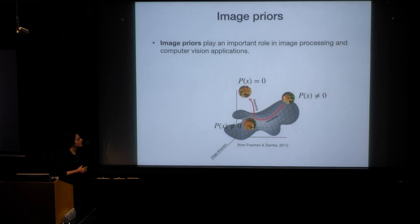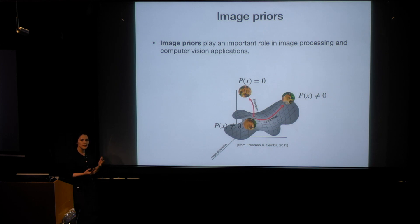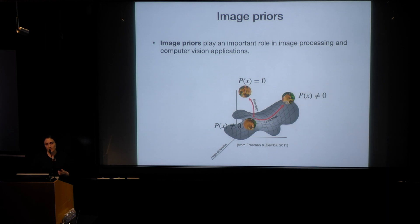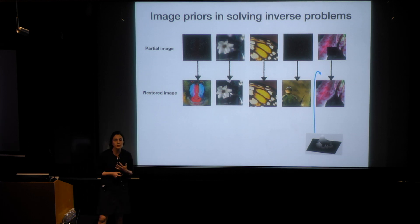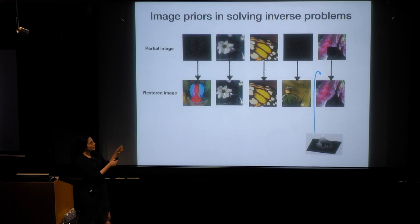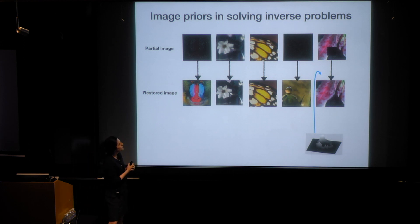Let's start with image priors. Image priors play a very important role in different tasks in image processing and some tasks in computer vision. By an image prior, I mean a probability distribution that assigns high values to good, natural, clean images, and zero or very low values to distorted and degraded images in the high-dimensional space of all images. If we have access to this kind of probability distribution, we can sample from it, but a more real-life example is to solve inverse problems using this distribution. Solving inverse problems means I have a partial measurement of an image and I want to restore or recover a good image consistent with that constraint.